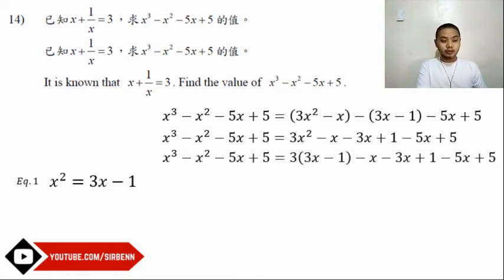Simplifying by applying the distributive property, this becomes 9x - 3 - x - 3x + 1 - 5x + 5.